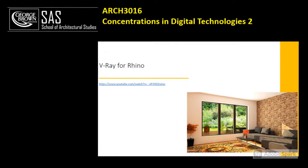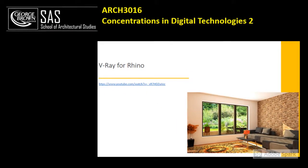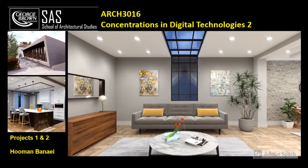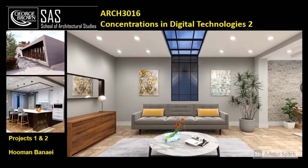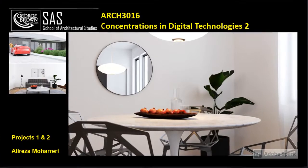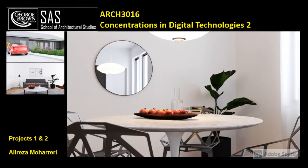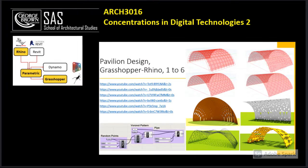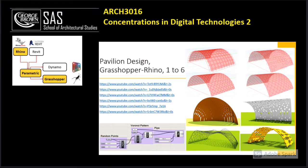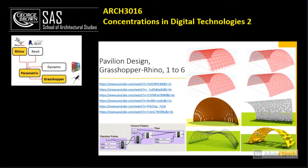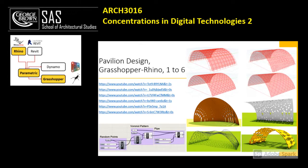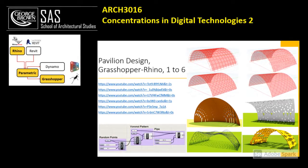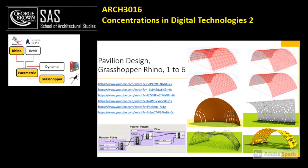We also briefly introduce V-Ray for Rhino. On the second half of the semester, we talk about Grasshopper, which is a plugin of Rhinoceros that helps us with parametric design. On Project 3, students design a pavilion.